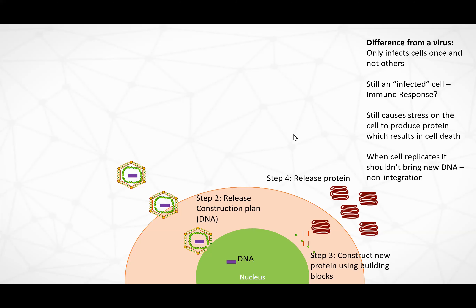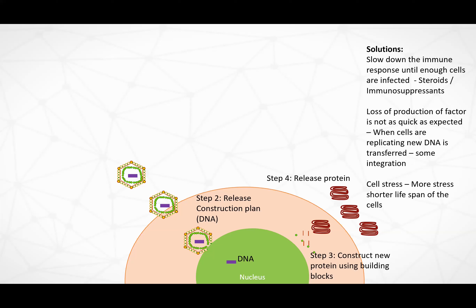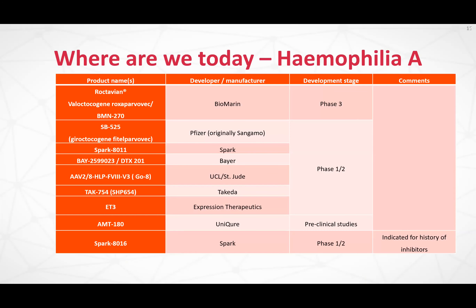We've had some immune responses in the gene therapies. The solution is to slow down the immune response until enough cells are infected — using either steroids or immunosuppressants. We have seen a loss of production in some cases. AAV is a non-integrating virus, but something is happening where when cells replicate, some DNA has been transferred — that would go to integration. One thing postulated is: the more stress, the shorter the lifespan of the cell, and therefore there might be a drop in expression.